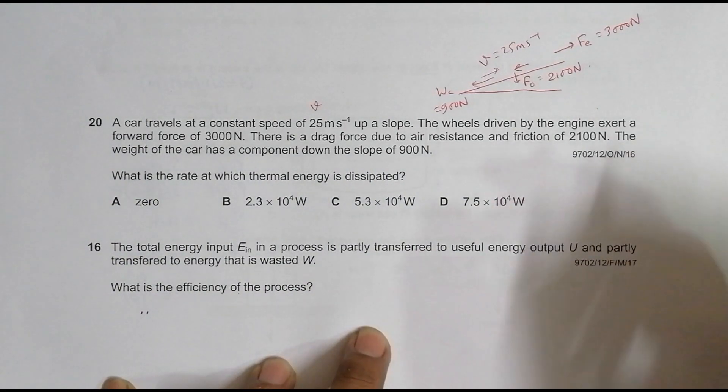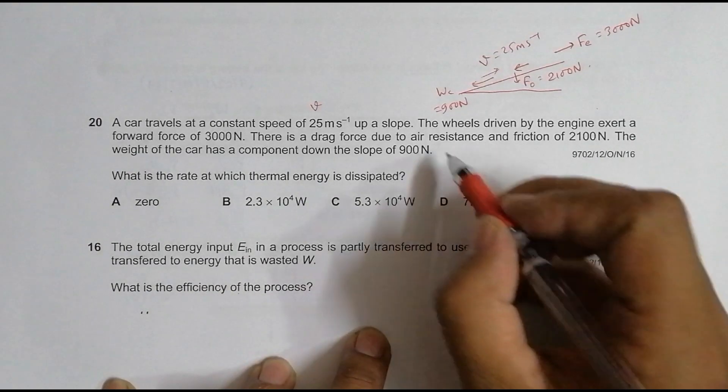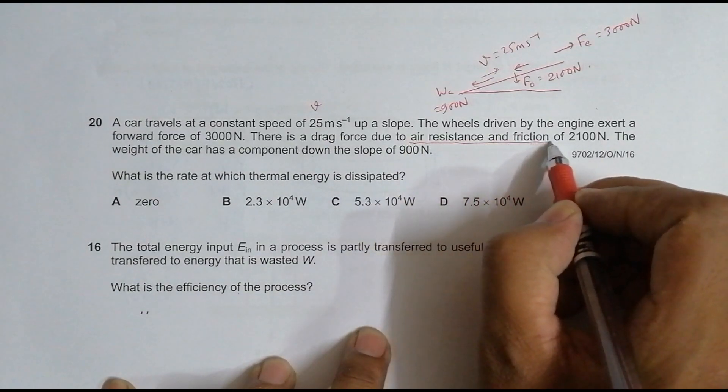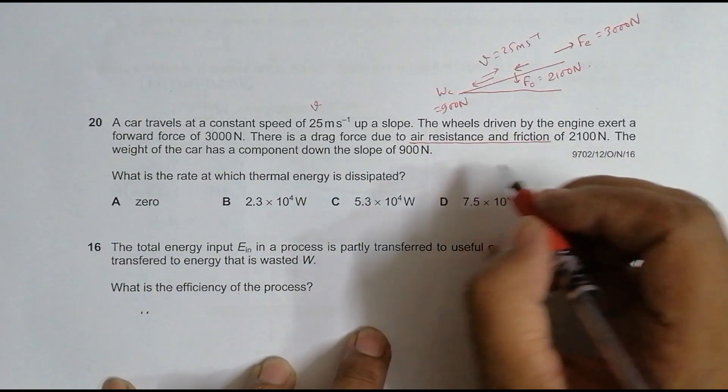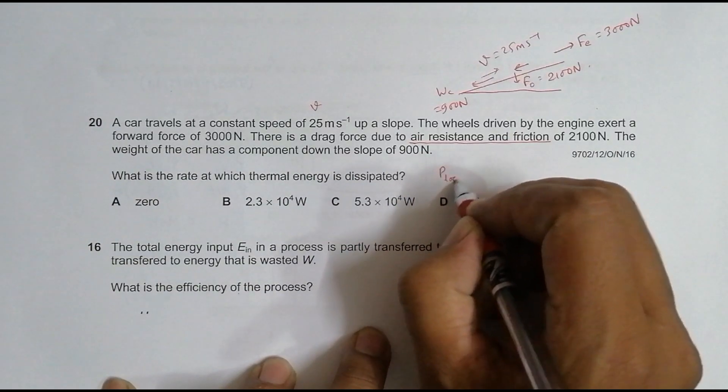It's due to the air resistance and friction. So that's why the rate should be equal to that power loss. Power loss due to thermal energy should be equal to the responsible force, which is the F opposing, into the velocity.